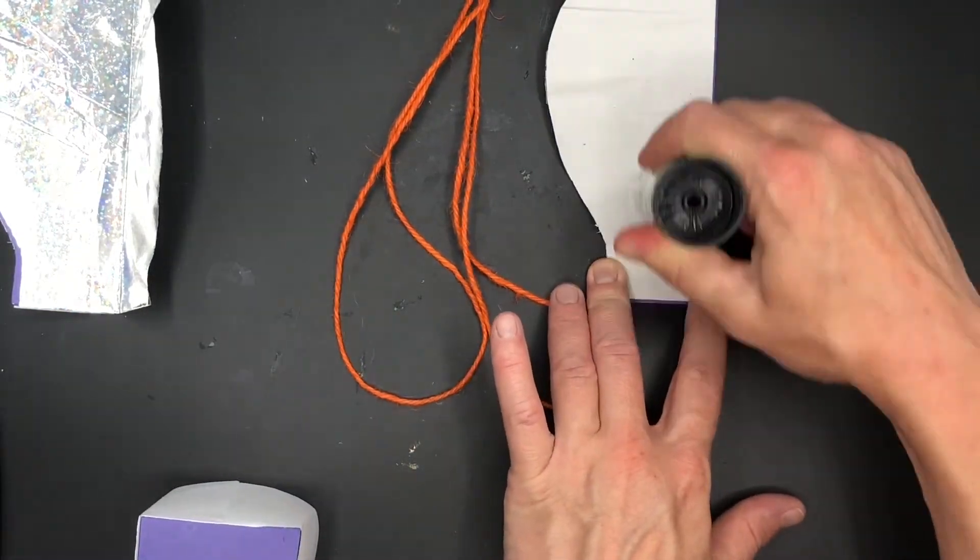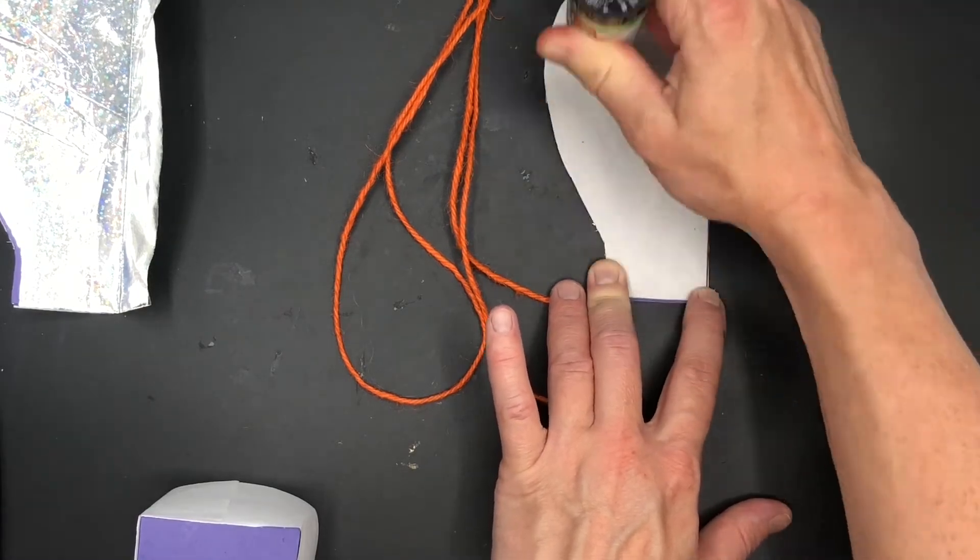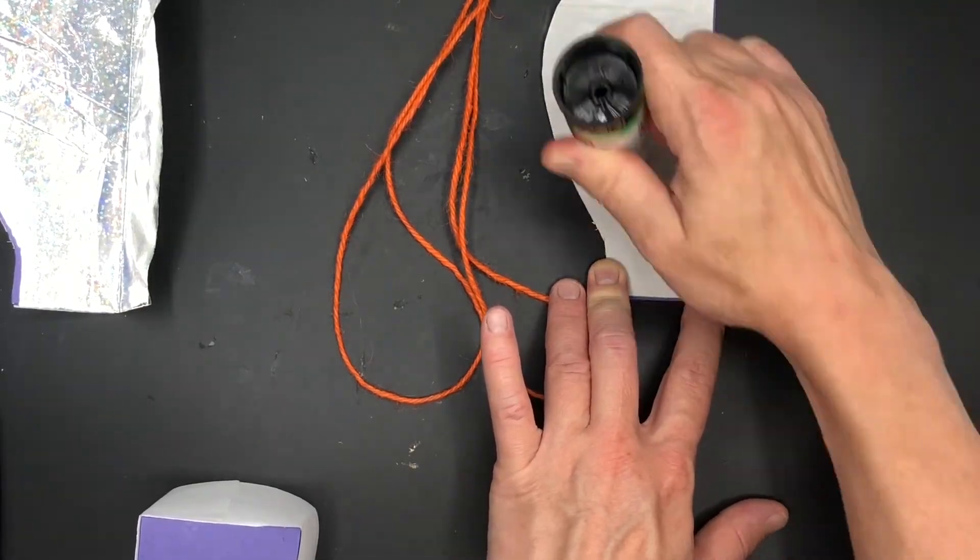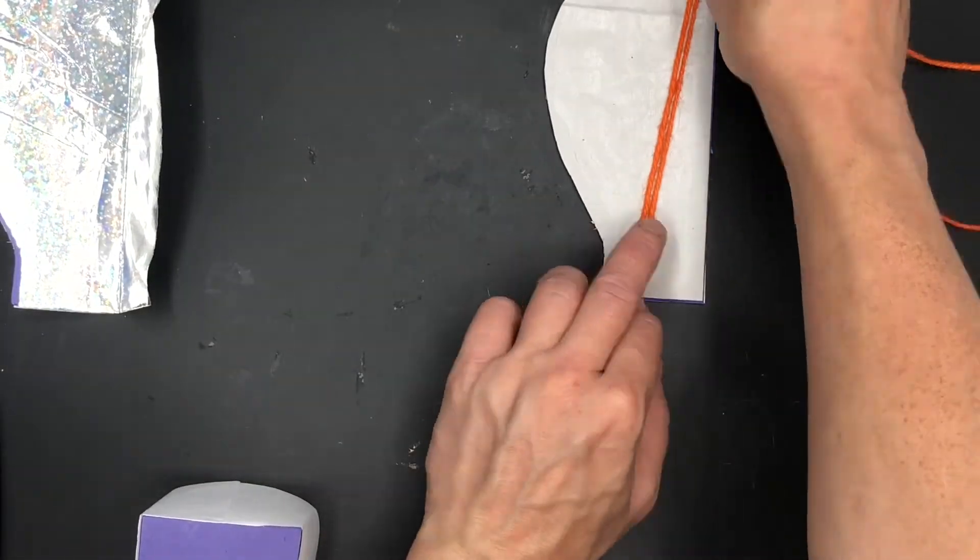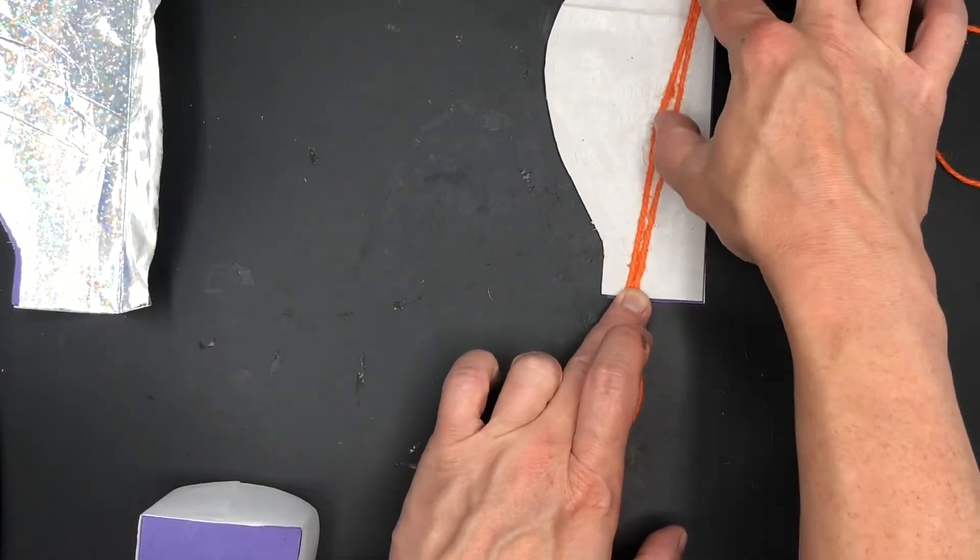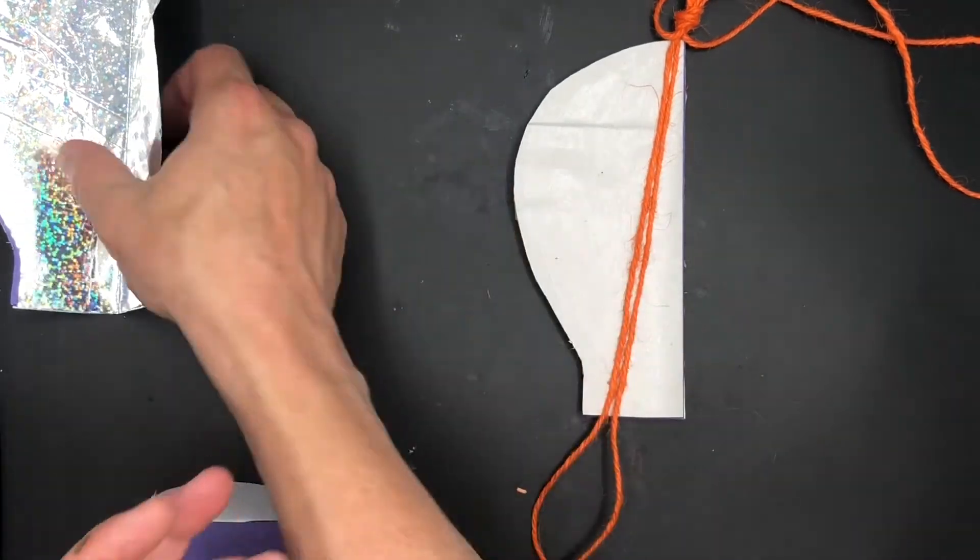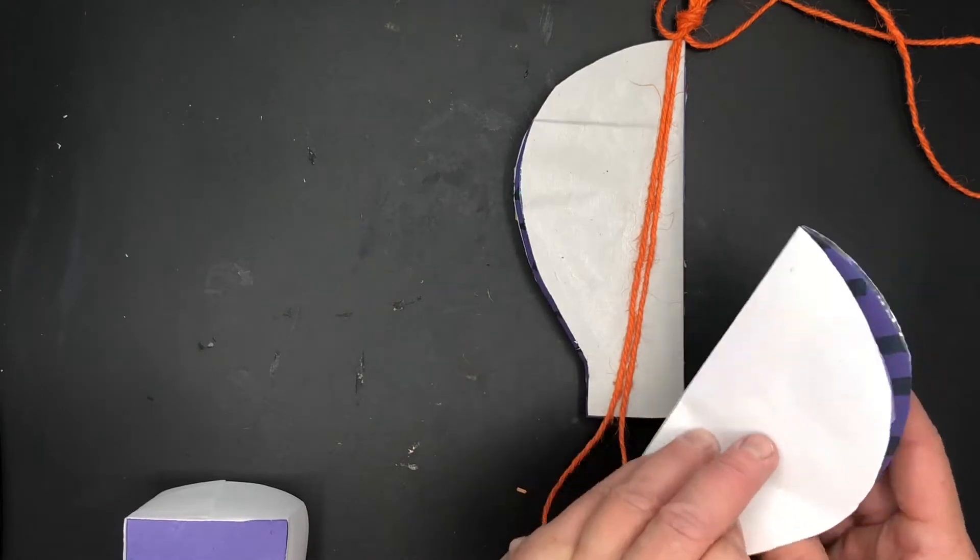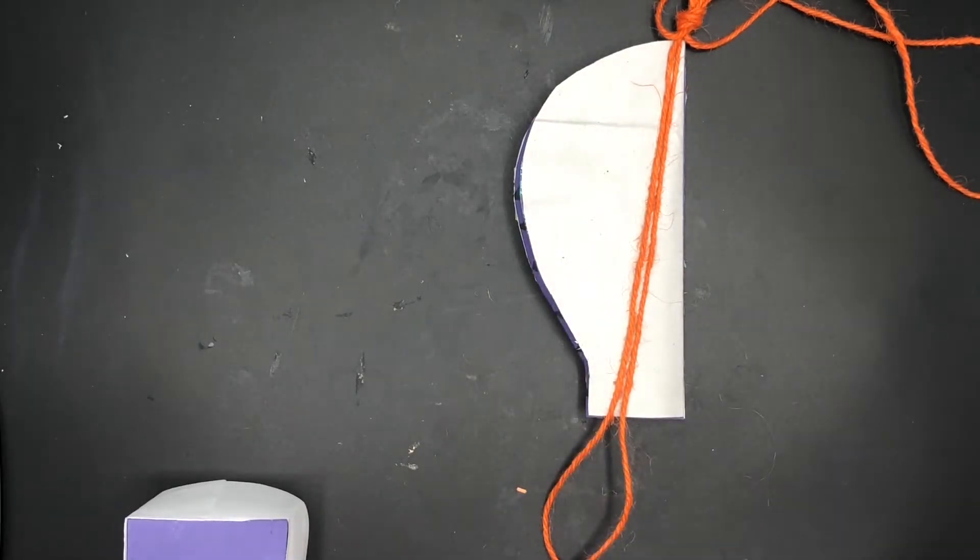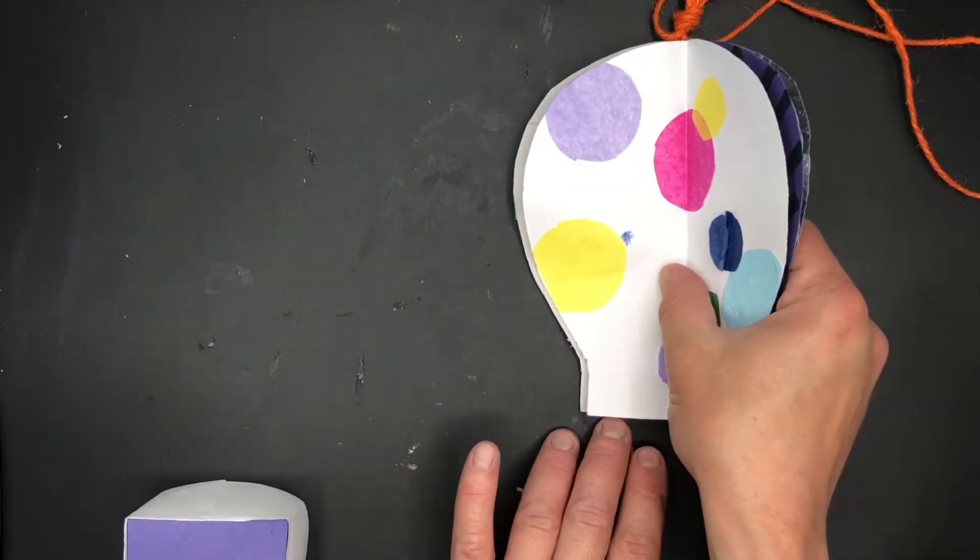I'm going to take some glue, spread it onto my balloon shape and stick my string down onto the balloon shape. If it's not quite staying you can always use sellotape to help with this. Then covering the rest of it with glue I need to just sandwich those bits of balloon shape together.